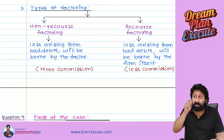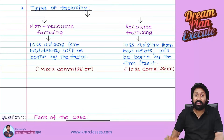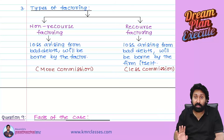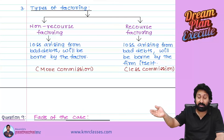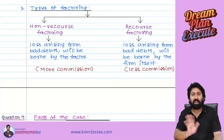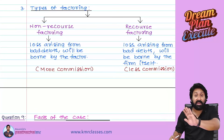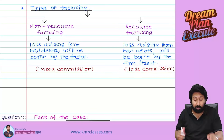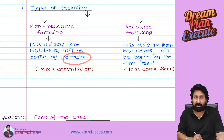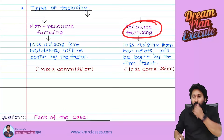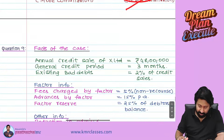Types of factoring: Non-recourse means once you transfer debtors to the factor, it belongs to the factor only. The risk of collection stays with the factor. If debtors are irrecoverable, the factor cannot return them — the transaction is complete. Losses on bad debts are borne by the factor. In recourse factoring, the reverse applies — bad debt losses are borne by the firm, so the firm pays less commission.